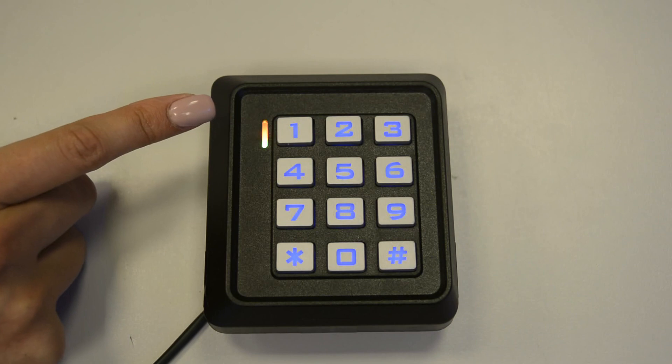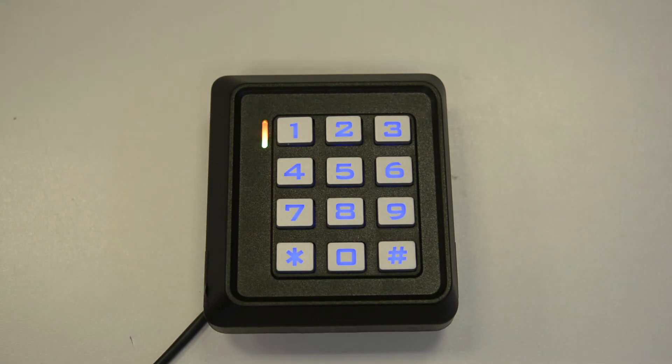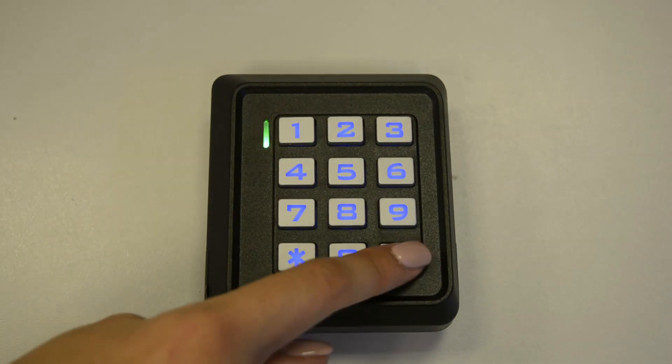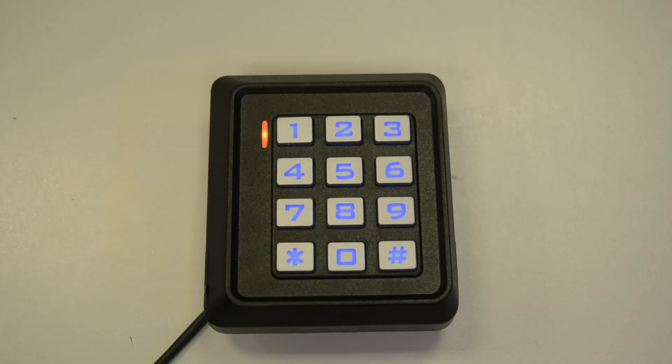Now enter your chosen time in seconds that you would like to set the time delay to. So I would like to set it to 3 seconds so I'll enter 3, enter the hash key to confirm and a star to exit programming mode.